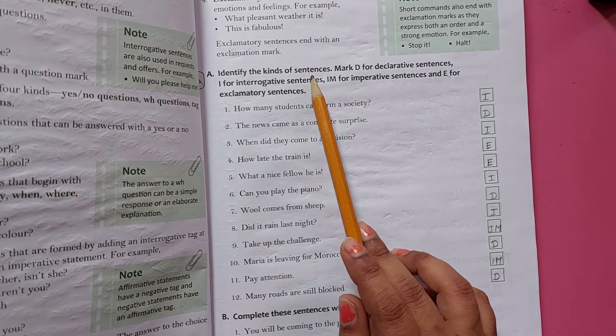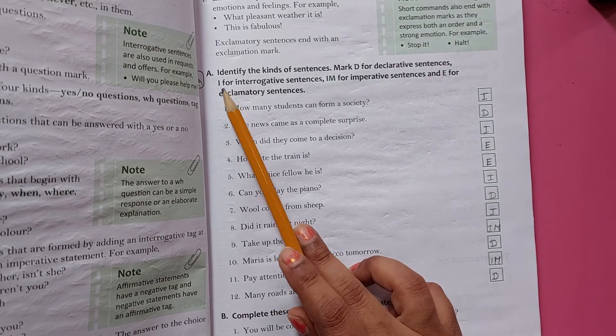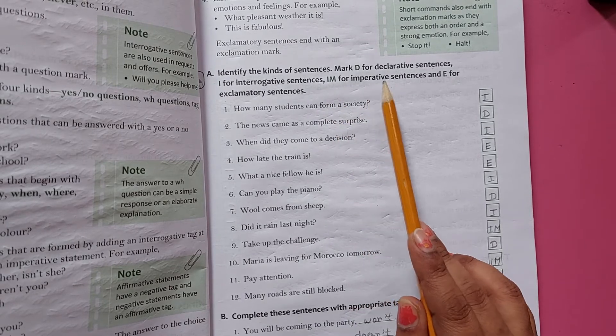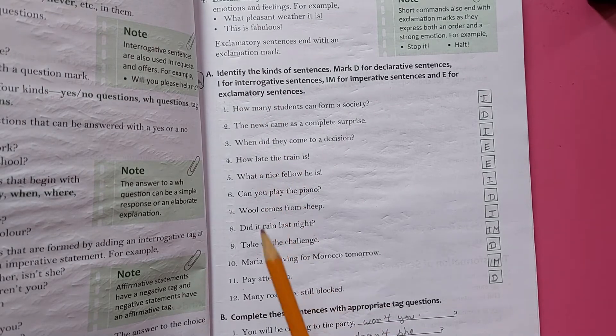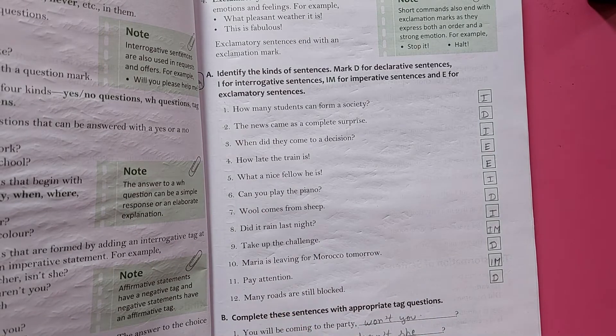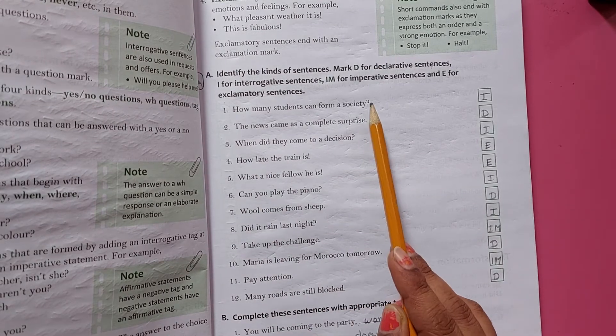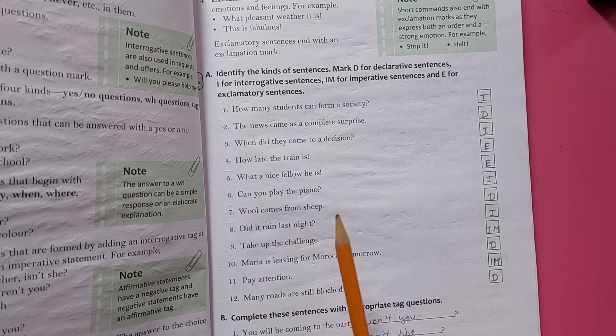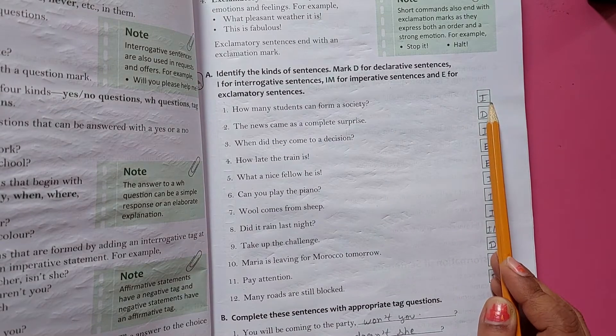Identify the kinds of sentences. Mark D for declarative sentences, I for interrogative sentences, IM for imperative sentences, and E for exclamatory sentences. Jaisi ki humne pata hi hai ki maine aapko pichli video mein ye saree sentences ke jo meanings jo thae, wo samjhaayi thae. Ab dekho, jo toh question form mein aagate hai. How many students can form a society? Yeh kya aagya?